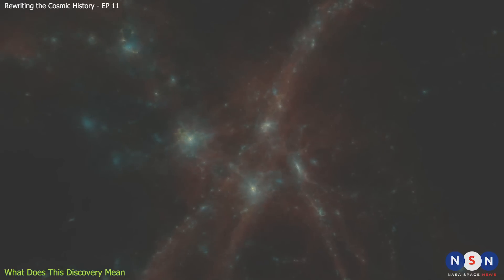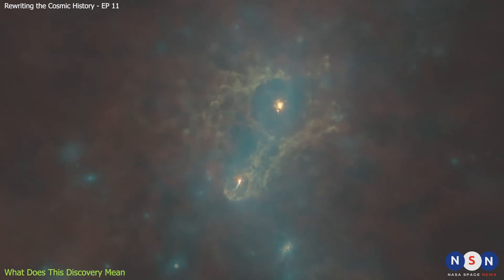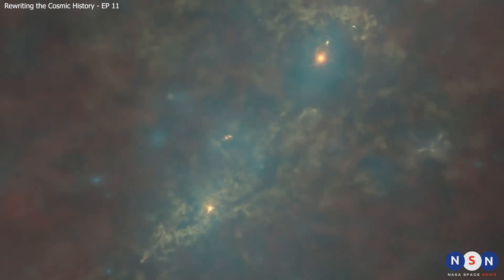But finding Pop 3 stars is not easy. They are very rare and faint, and they are hidden behind billions of light-years of intervening matter. To detect them, we need to use sophisticated techniques and instruments that push the limits of our technology and ingenuity. We also need to be lucky enough to find favorable conditions that enhance their visibility, such as gravitational lensing or nearby supernova explosions.